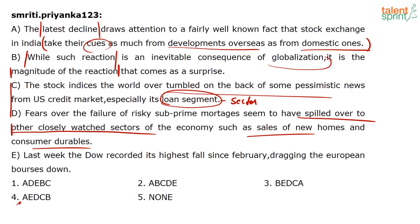And then E just culminates, saying last week also, kind of drawing attention to why this is contributing to the latest decline — the Dow recorded its highest fall since February, dragging others down. So I will go with option 2. On a slightly higher level, if you are not paying attention to some of the phrases within the context, you might miss the sequence. Some of the clues — phrasal verbs like 'spilled over' and 'tumbled on' — and look for what sectors are being discussed. When I say 'other closely watched sectors,' this 'other' means there is some other sector already spoken about, which is only in C: the loan segment.